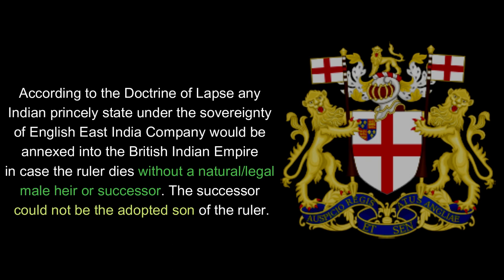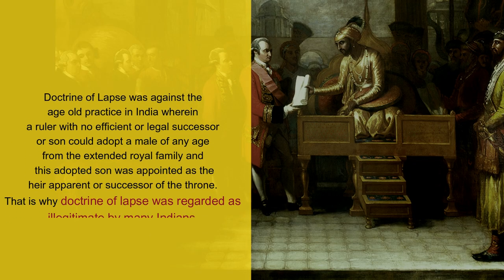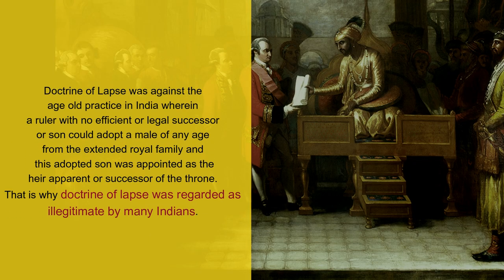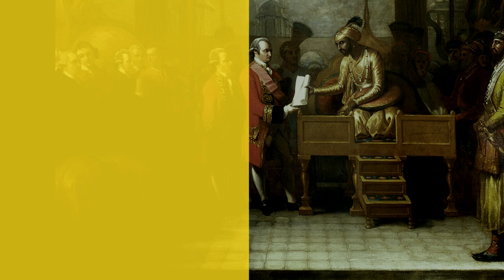The Doctrine of Lapse clearly reflected a pro-imperialistic approach to expand the realm of the British Kingdom in India. It was against the age-old practice in India, in which a ruler with no natural or legal son could adopt a male of any age from another branch of the royal family and appoint him as the heir apparent or successor of the throne. That is why, when the British government came with the Doctrine of Lapse, it was regarded as illegitimate by many Indians.